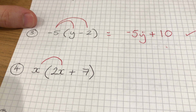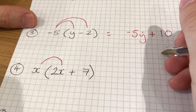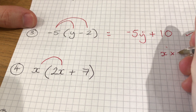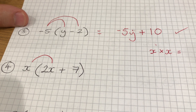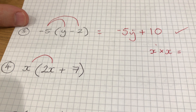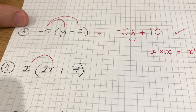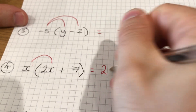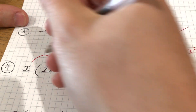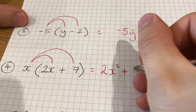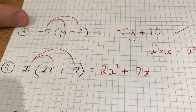Question 4 has x multiplied by x. Just to note: x times x — if you multiply something by itself, that's the same as squaring it, so x times x is x squared. So x times 2x would be 2x squared, because it's x times 2 times x — the x and the x make x squared, and the 2 stays. Then x times plus 7 gives you plus 7x.